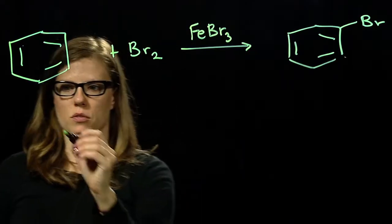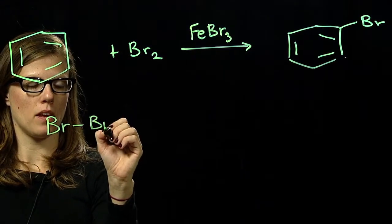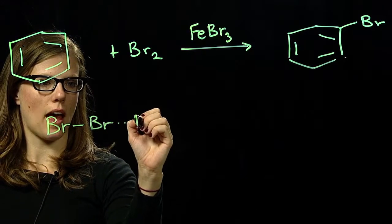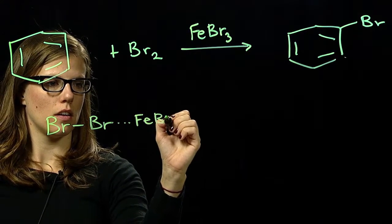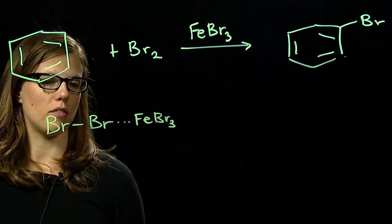So the first step of this reaction is activation of our electrophile or bromine. You have one of the bromines activate by coordination to the iron of FeBr3.